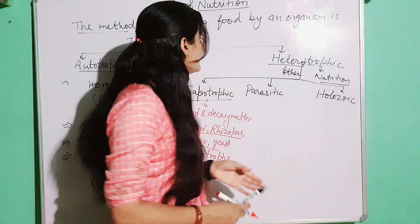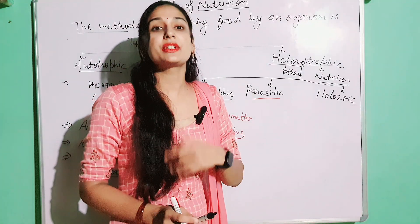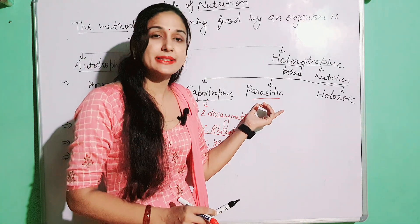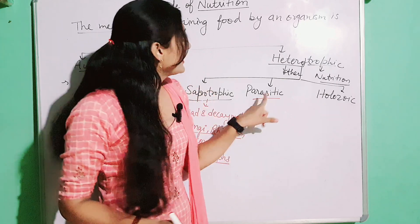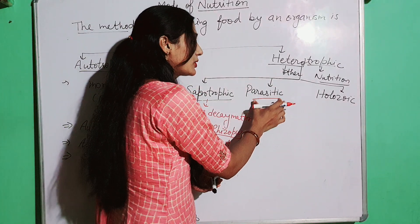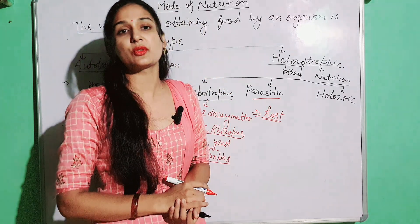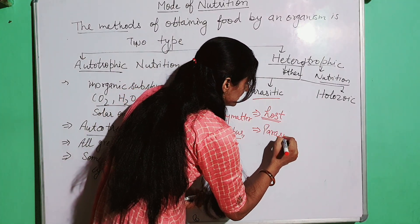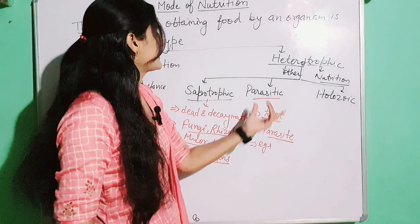Parasitic mode of nutrition: in this type of nutrition, the living organisms take their food from the body of other living organisms without killing them. They take nutrition from the other organism's body — they harm it but do not kill it. The organism from whose body nutrition is taken is called the host, and the organism that takes the nutrition is called the parasite.